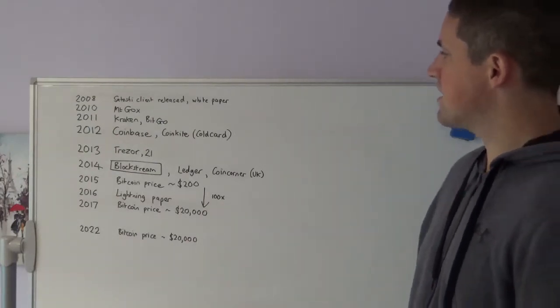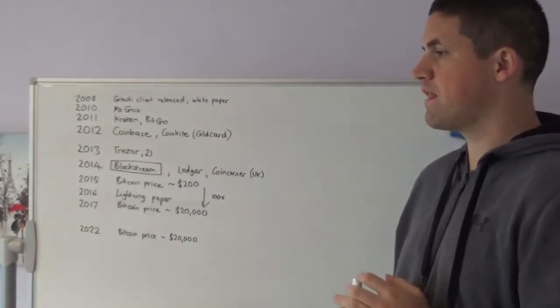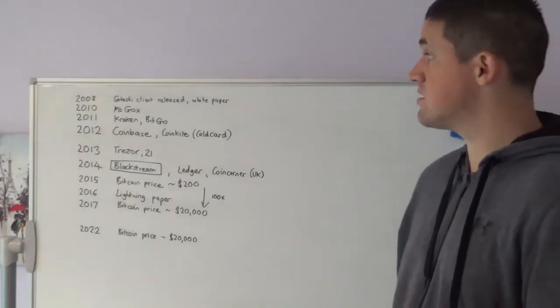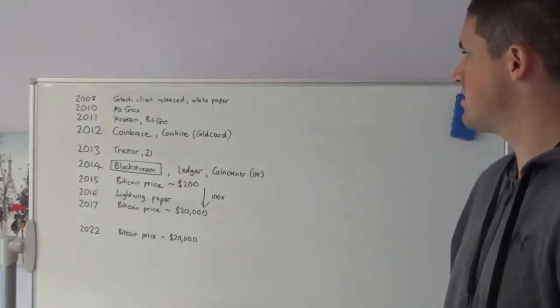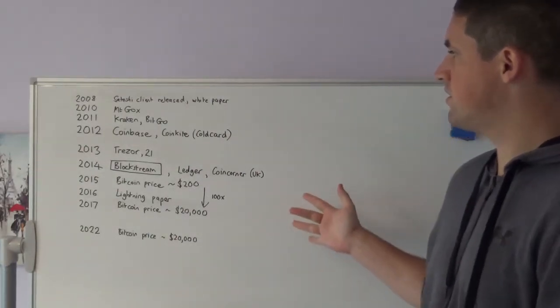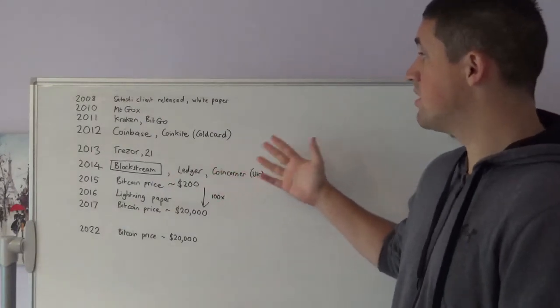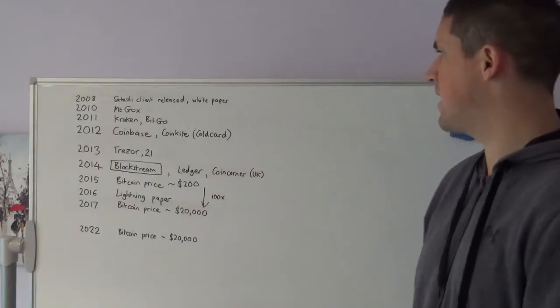The next really important product for the Bitcoin ecosystem was the hardware wallet, the hardware signing device. The three companies that really pushed this forward: initially it was Trezor, but Ledger and CoinKite with their cold card device came later.